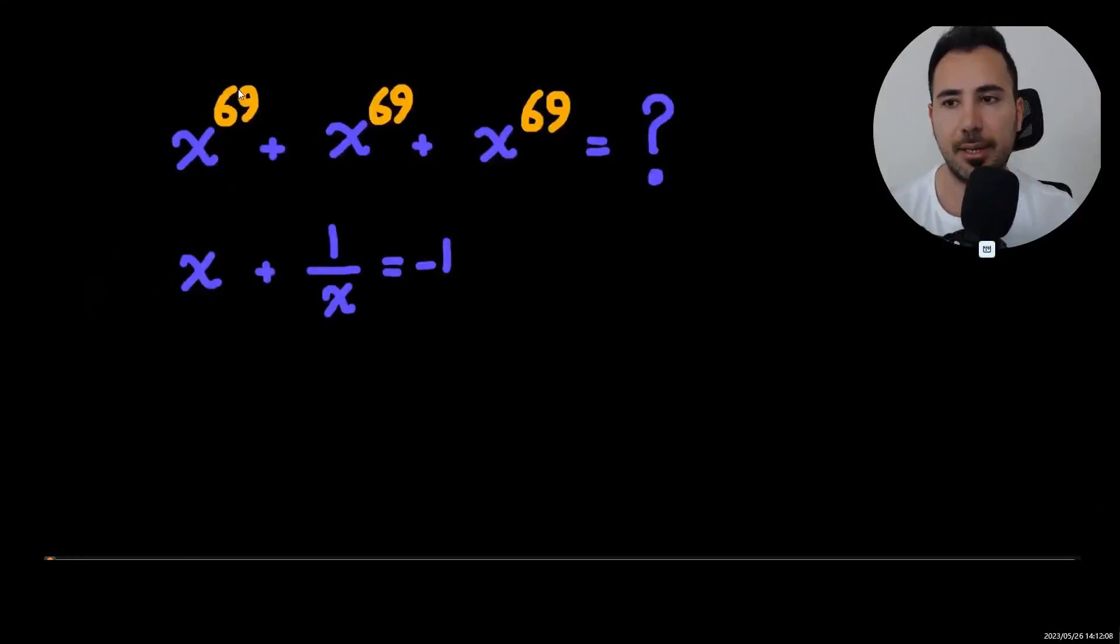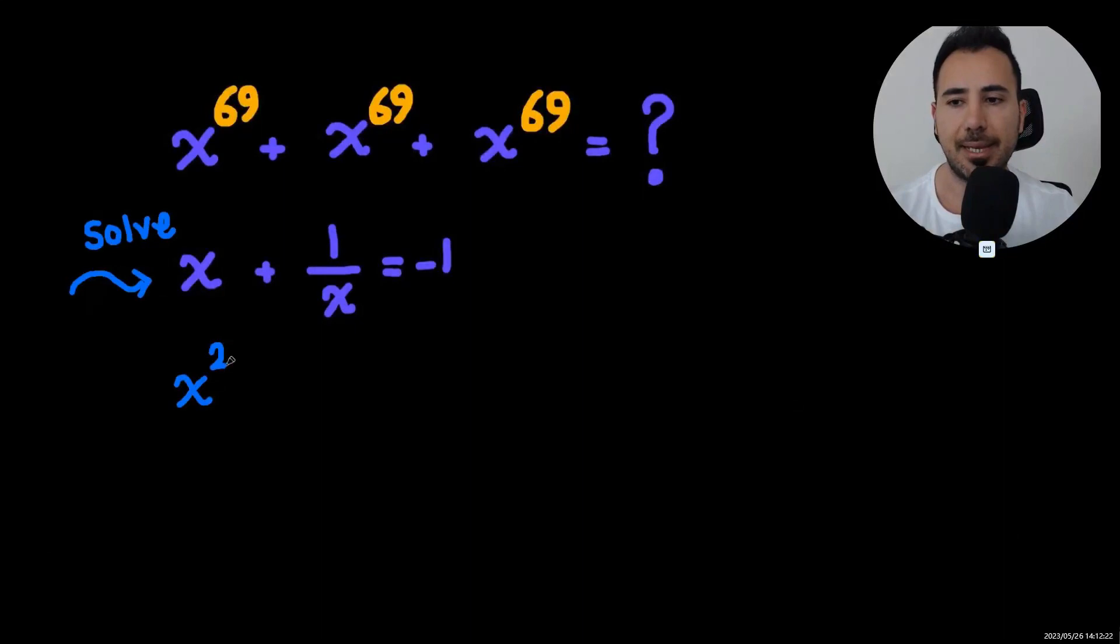And then have it to the power of 69. Let's see if this is possible. To do that we multiply each term by x, so x cubed plus 1 equals minus x.